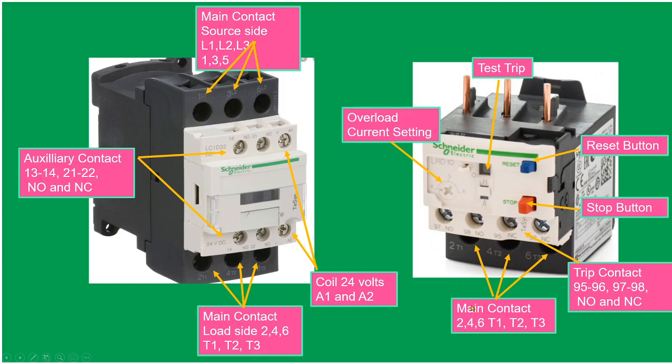On the other side, it's main contact two, four, six, T1, T2, T3. This is the load side. This three prong here is where we're going to connect from the load side of the magnetic contactor. Here on the other side, we also have trip contact: 95, 96, 97, and 98. 95, 96 is the normally open.